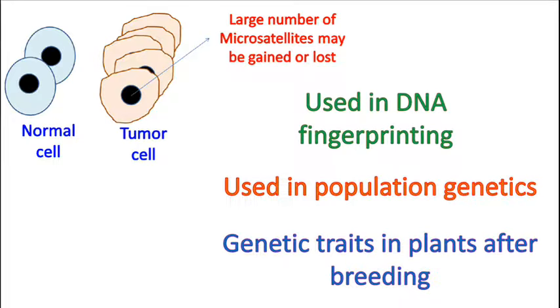In population genetics, microsatellites are widely used to study variation among different individuals in a population. And in the field of botany, they are widely used to analyze different genetic traits of the plant after breeding.